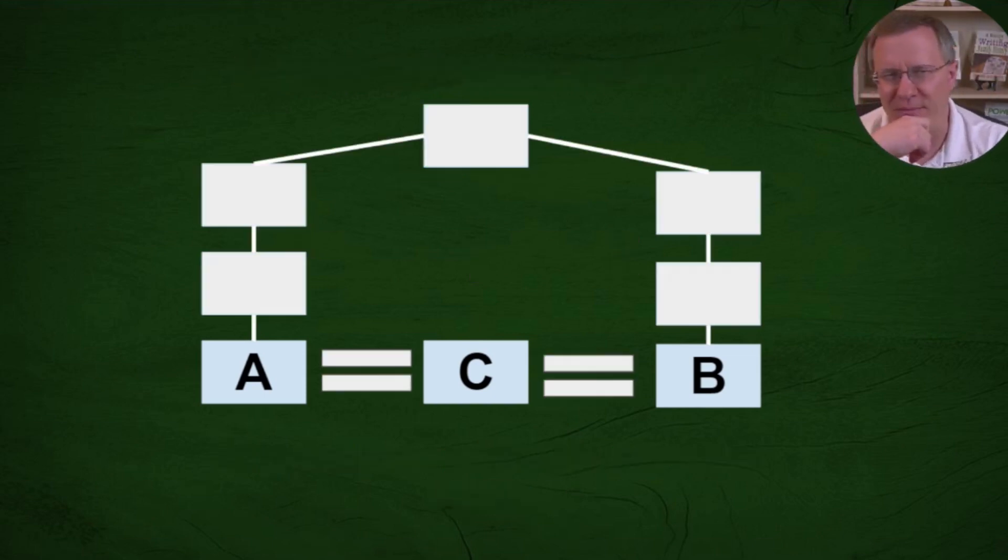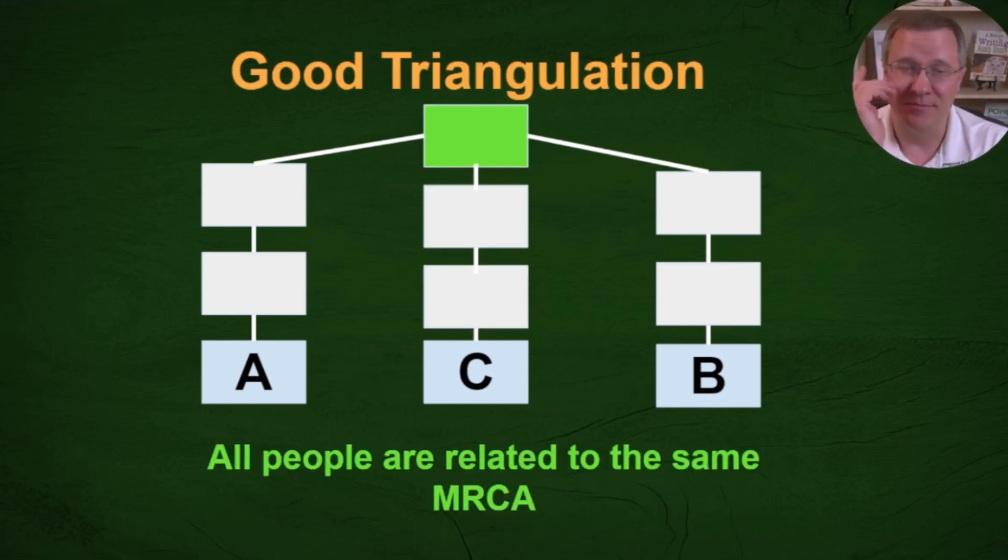Let's go back to one of our other examples then. So if we have A and B are second cousins they share a great grandparent and they triangulate with C meaning they share the same segment of DNA. How can this be good triangulation? Well in this case if C happens to be descended from this great grandparent as well all three of these people are related to this most recent common ancestor all through three different lines. In other words three children of this most recent common ancestor resulted in each one of these people and that would be a good triangulation. So even though they're just second cousins what some people may say is a close relationship this is actually a good triangulation.